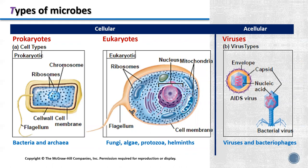There are so many types of microbes. For this slide, I'm going to group them into two main groups: cellular microorganisms and acellular. For cellular microorganisms, they can be divided into prokaryotes and eukaryotes. And for acellular, it's the virus.